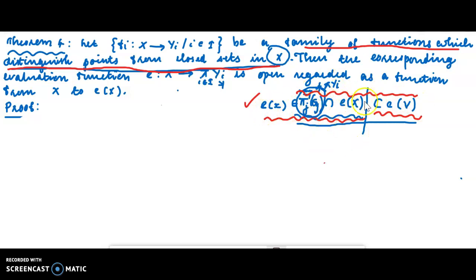E of X is a member of the relative topology of E of X, which is a subset of E of V.